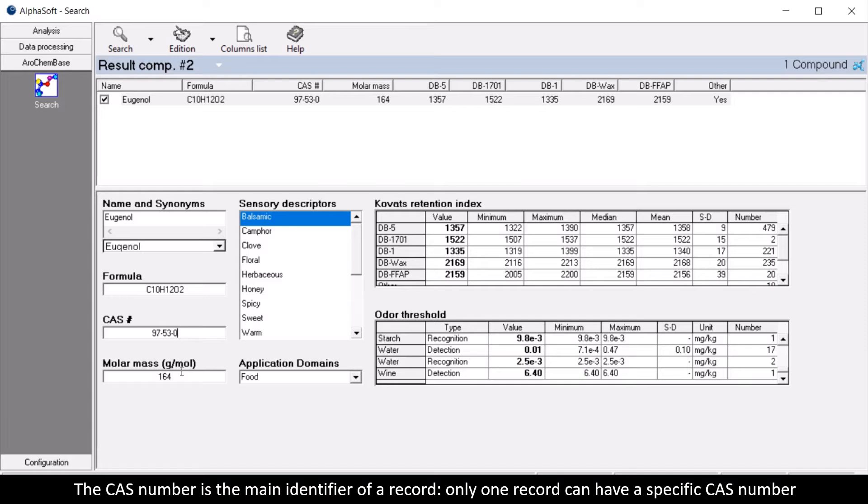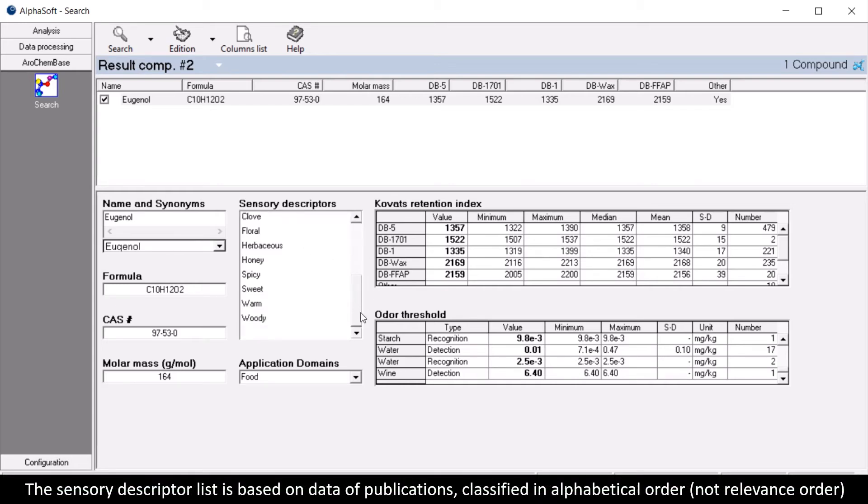The CAS number is the main identifier of a record. Only one record can have a specific CAS number. The sensory descriptor list is based on data from publications, classified in alphabetical order, not relevance order.